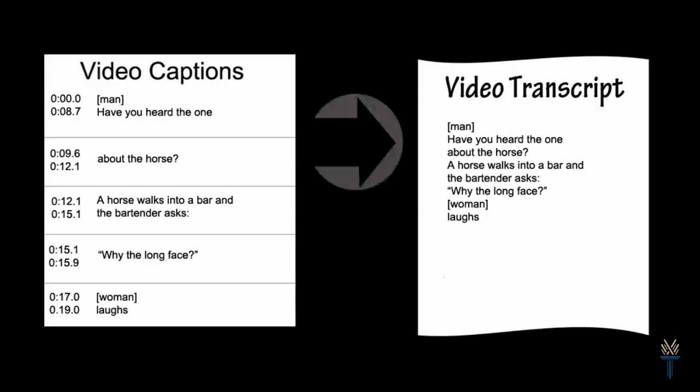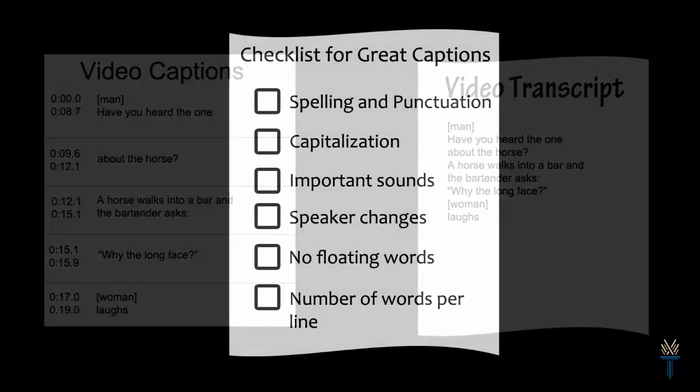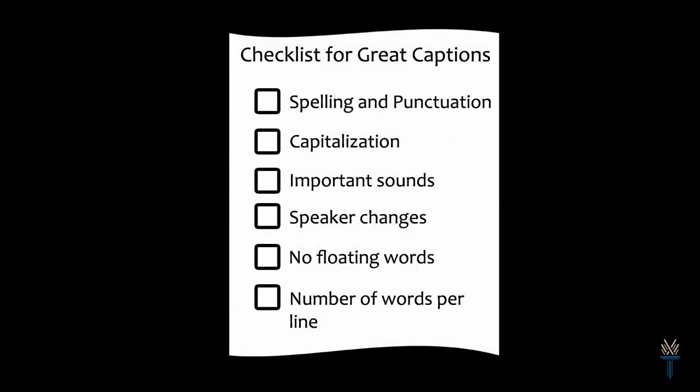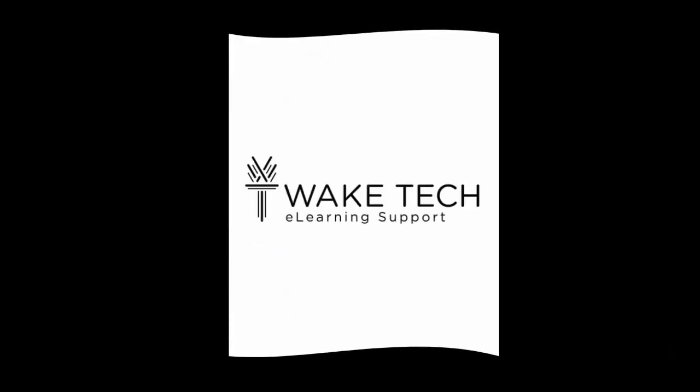It is suggested that you work with each video in phases. Focusing on one or two tasks at a time, such as spelling, punctuation, and capitalization, then making notations for important sounds and speaker changes, followed by eliminating floating words and paying attention to the number of words per line, will help your captioning be more accurate and look great. Take your time and you'll create quality captions.